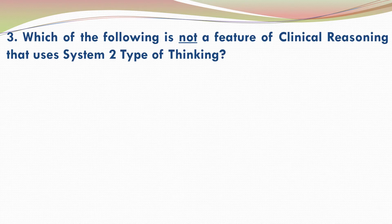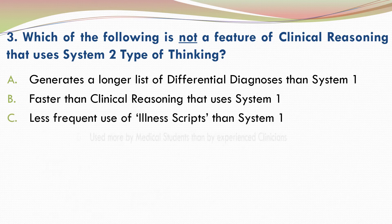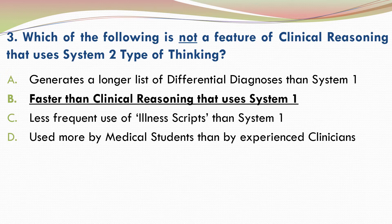Question 3: Which of the following is not a feature of clinical reasoning that uses system 2 type of thinking? Please go through the four options and make your selection. The correct answer is B. B is the statement which is not correct, because clinical reasoning that uses system 2 type of thinking is much slower than clinical reasoning which uses system 1 type of thinking.